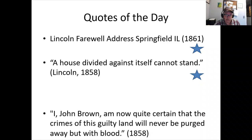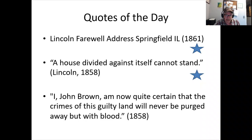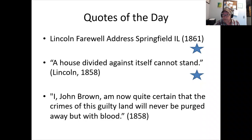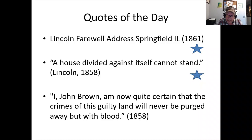Then there's John Brown. I'm going to cover Chapter 14 in one shot — about an hour — so you can always pause. Brown tries to start a slave insurrection at Harper's Ferry, on the Potomac upriver from Washington DC. When captured, he gives a quote: 'the crimes of this guilty land will never be purged away but with blood' — foreshadowing the war. He's hung for treason, and his execution becomes a very polarizing moment: martyr or traitor?